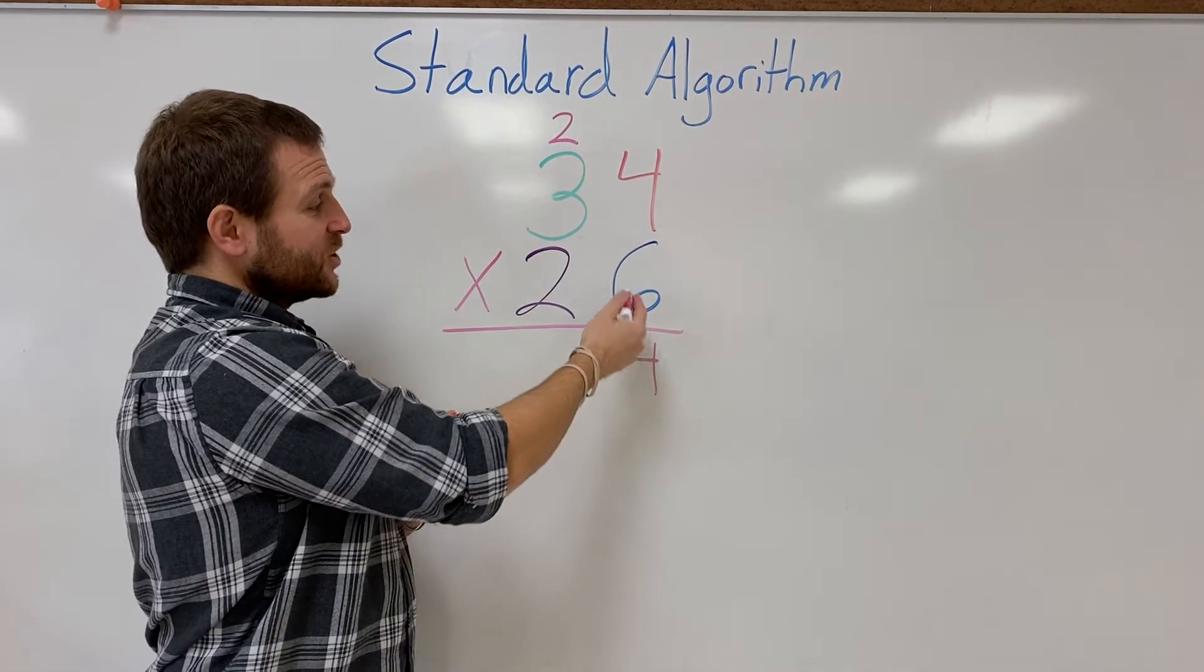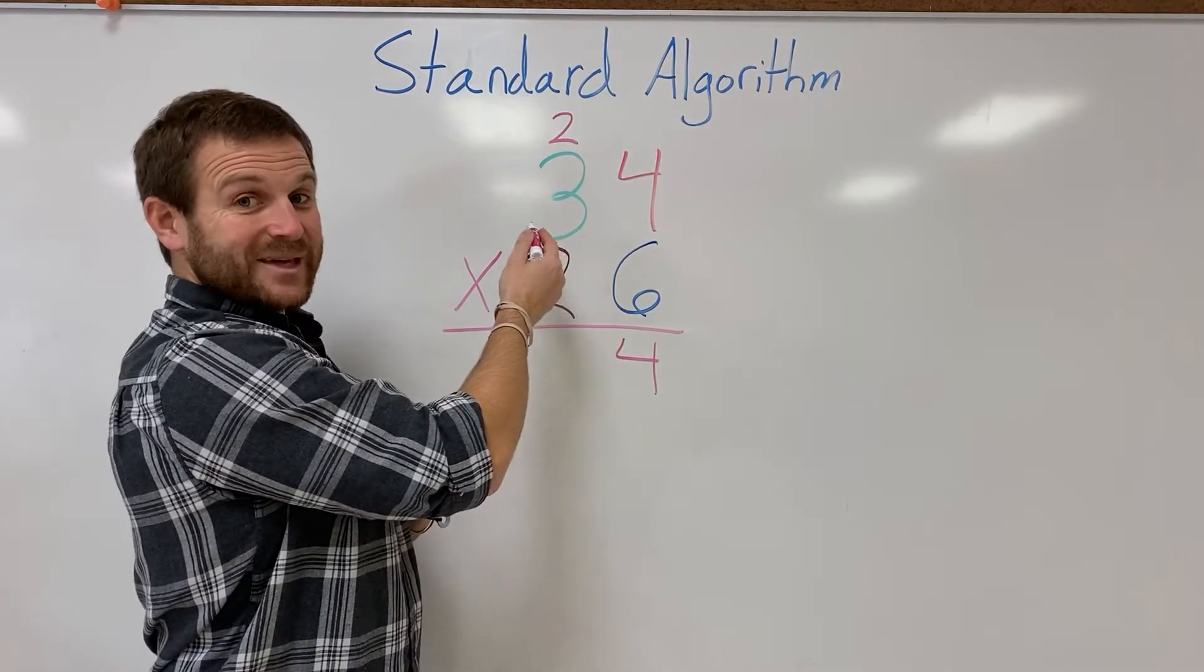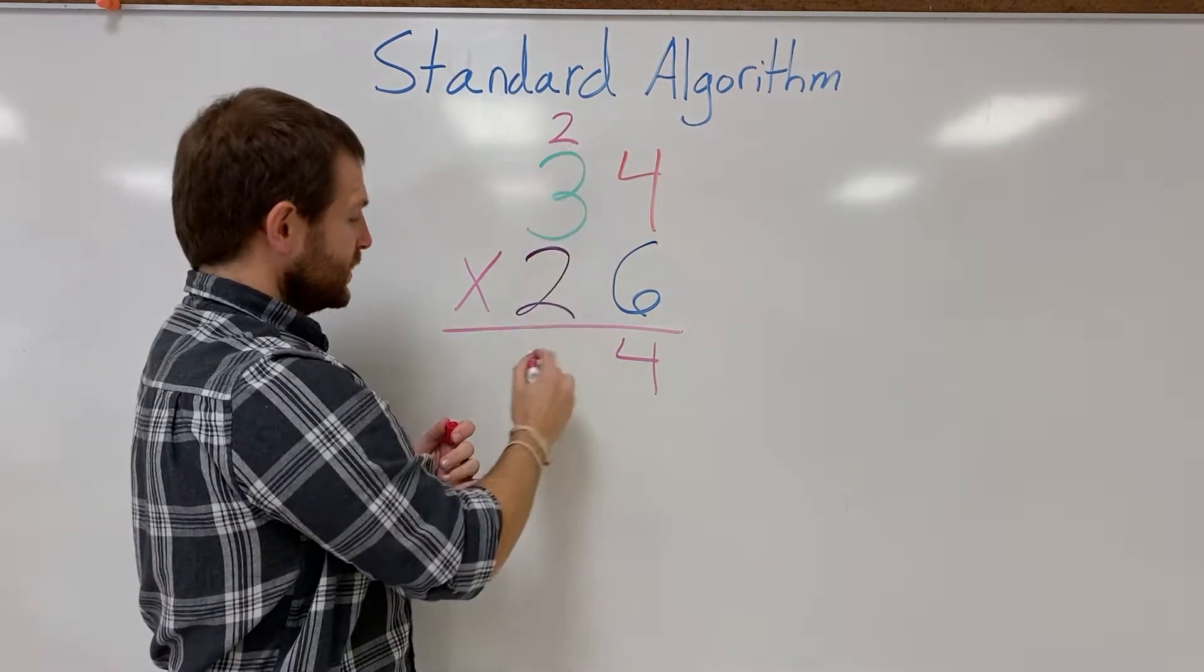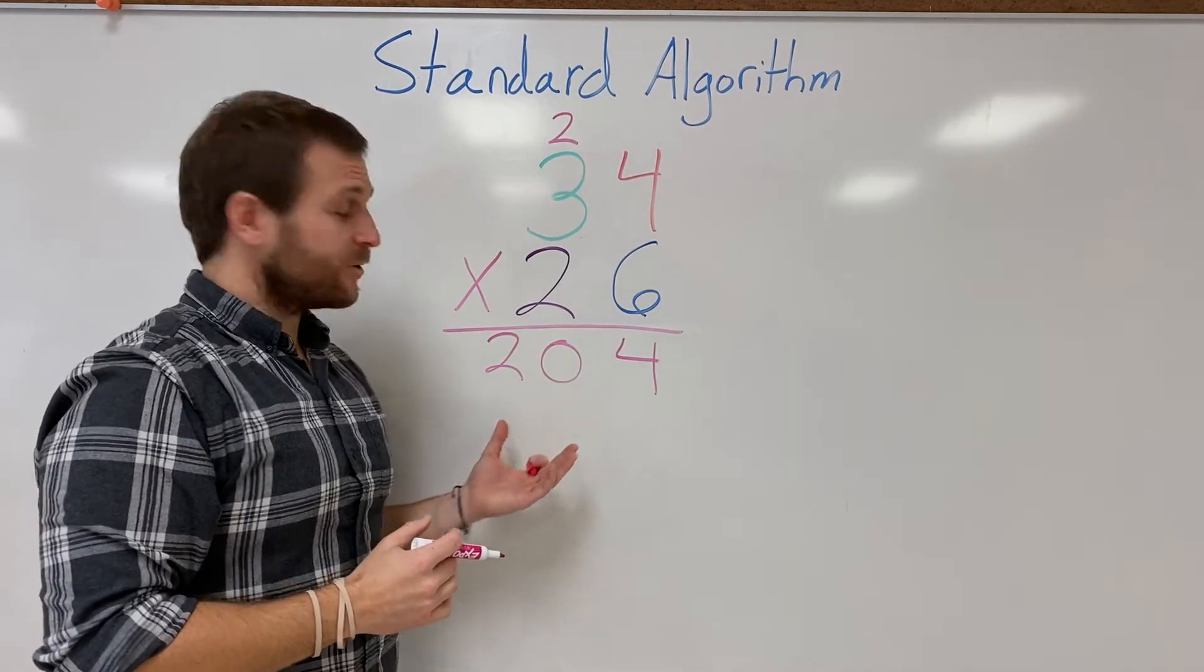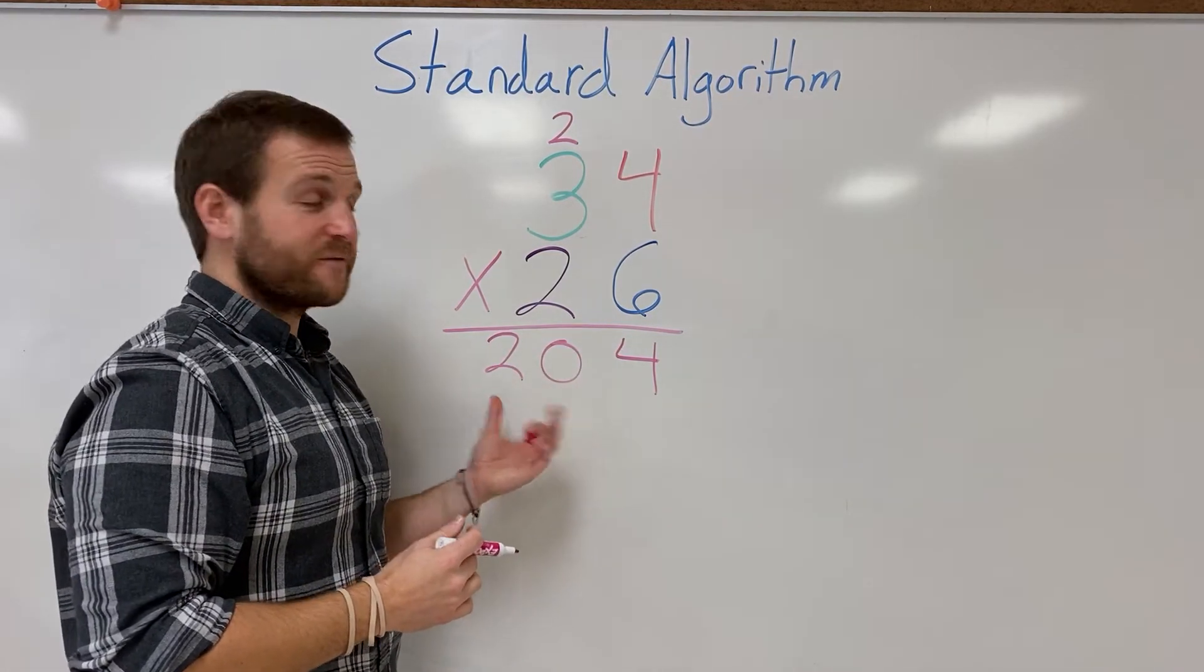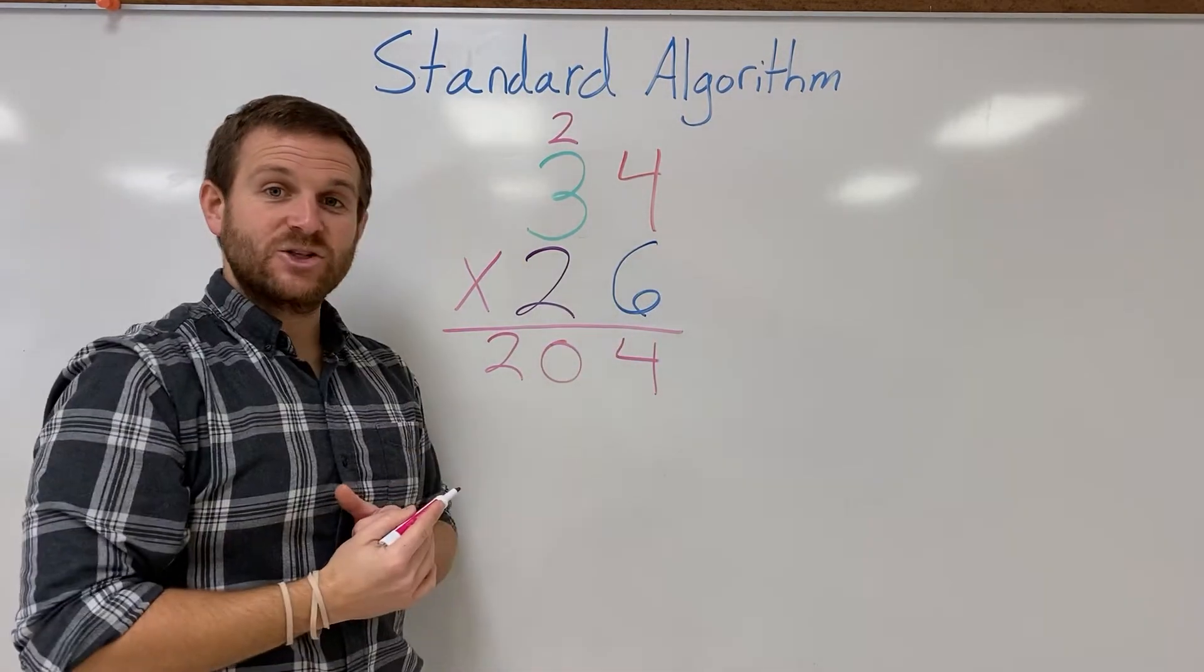Now I'm done with my ones so I'm gonna move on to 6 times 3. 6 times 3 is gonna give me 18 plus 2 is gonna give me 20. If I write those numbers out all my place value positions will fit perfectly and you can see that 6 times 34 is gonna give me 204.